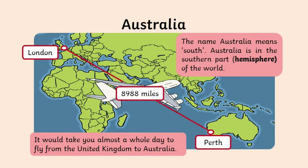Australia actually means 'south,' so it has quite an appropriate name for where it is located on our globe.